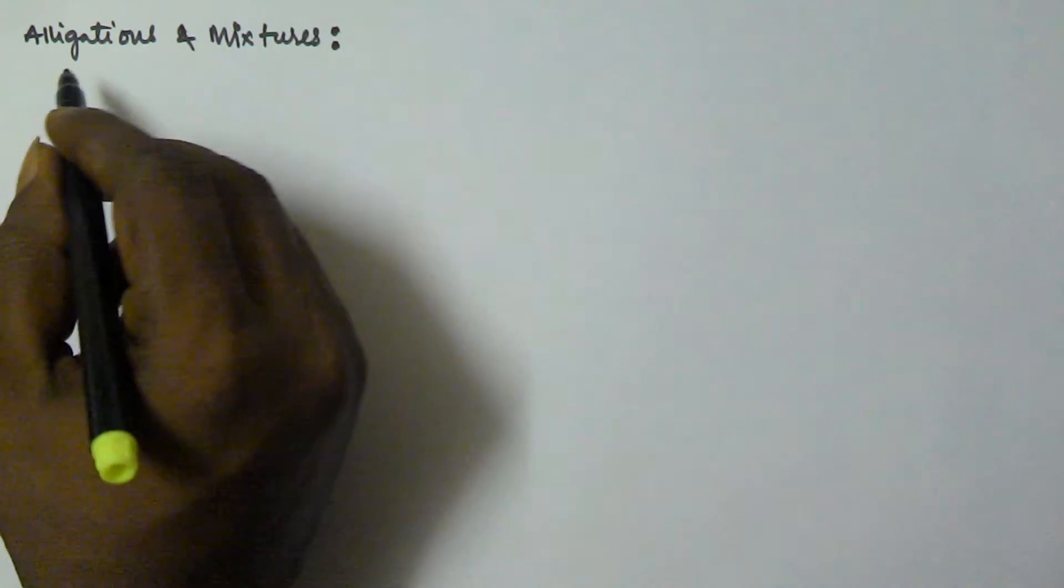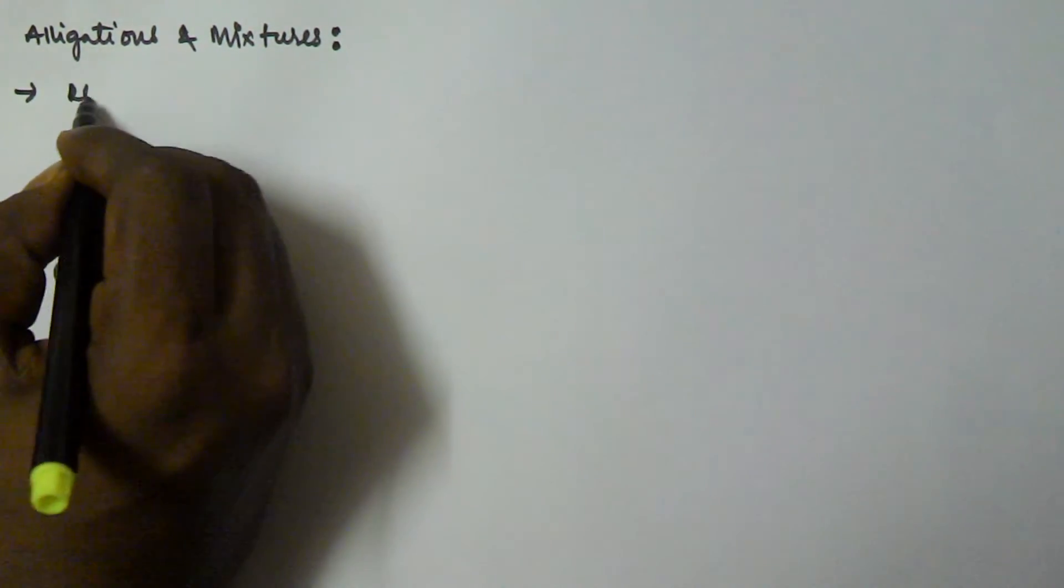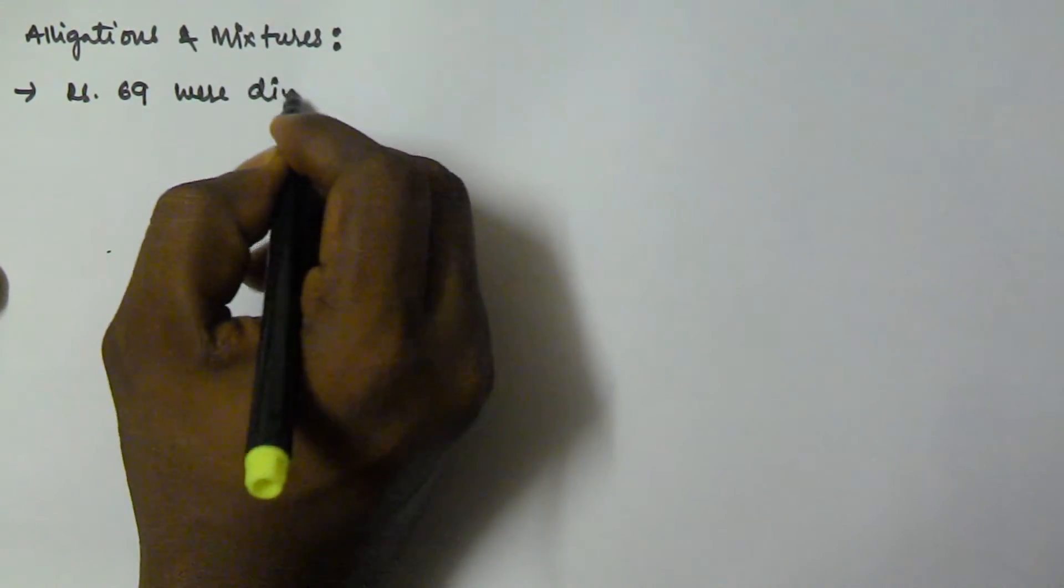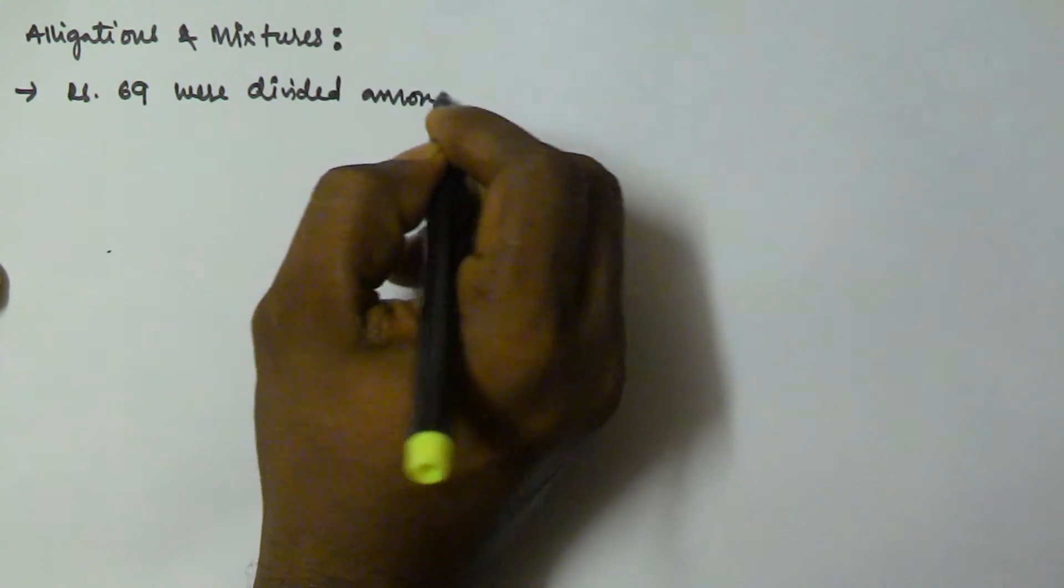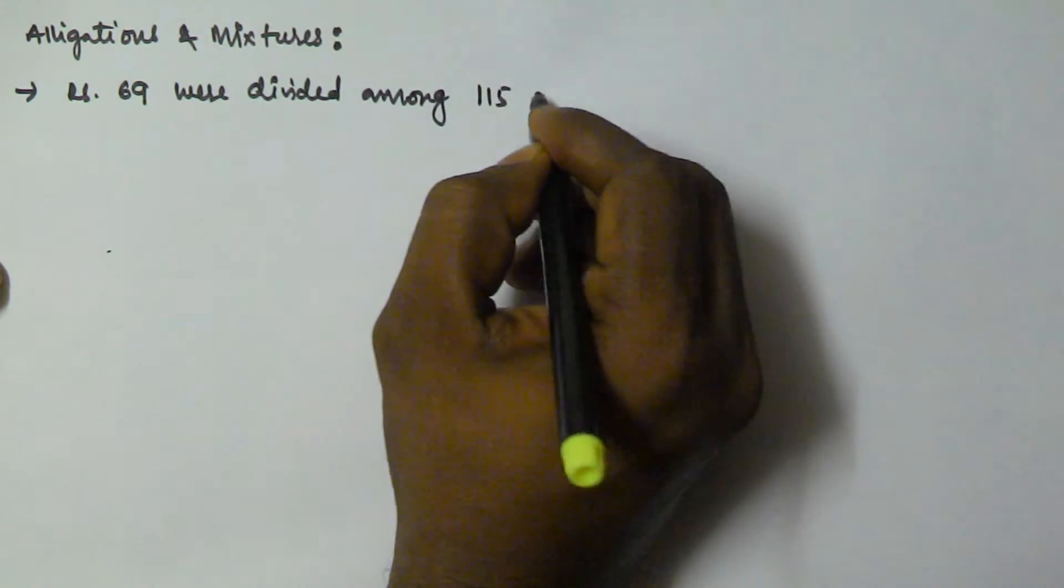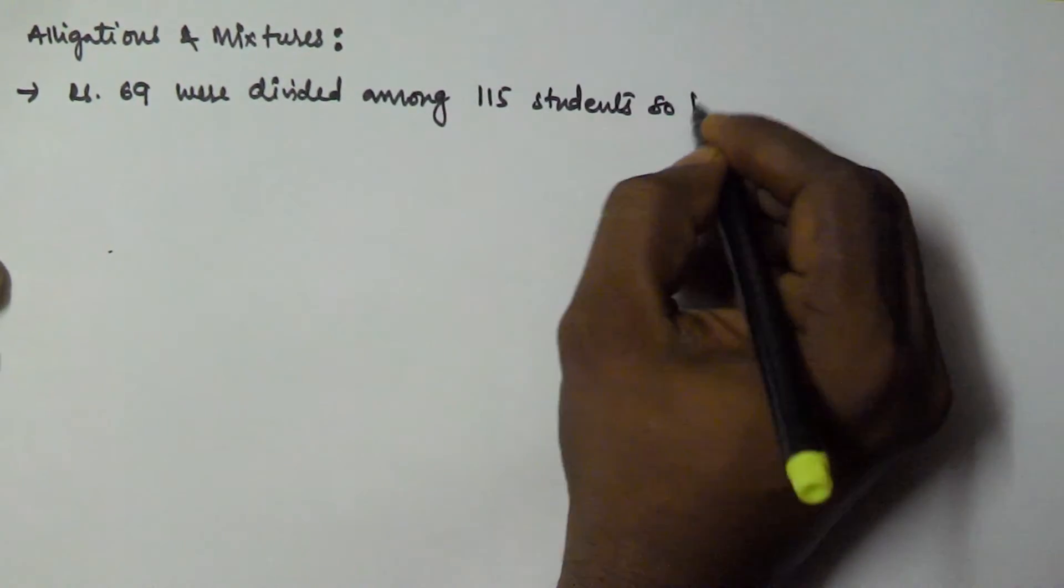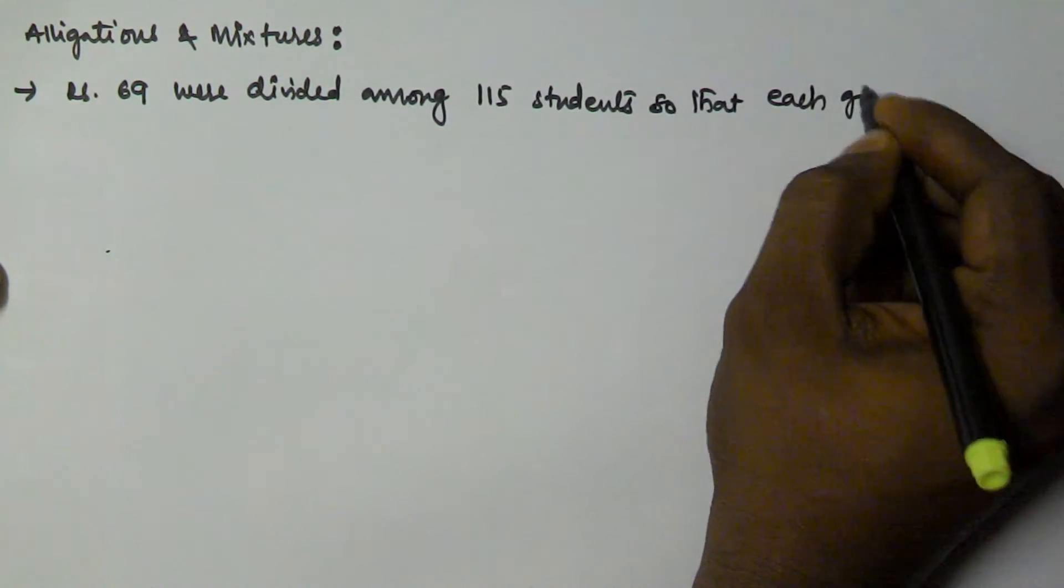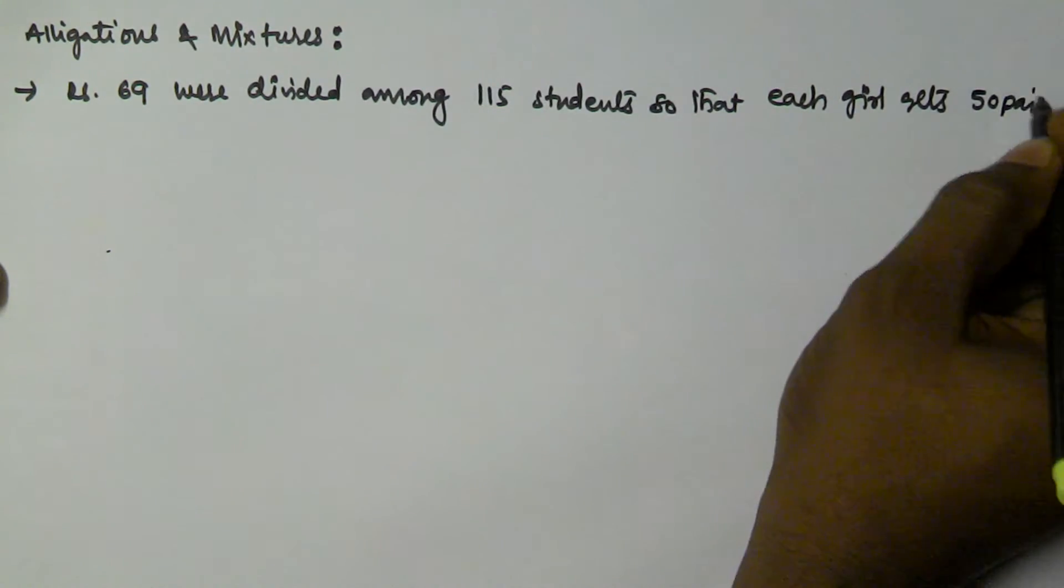Hello friends, in this video we will see a problem related to allegations and mixture. The problem is: rupees 69 were divided among 115 students so that each girl gets 50 paisa less than a boy.